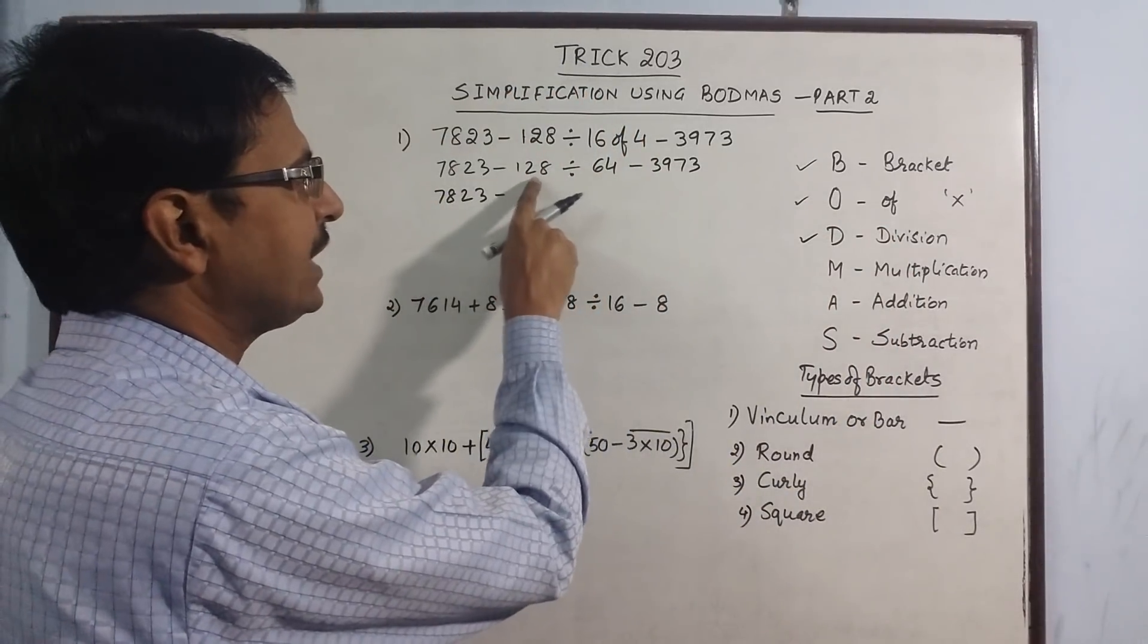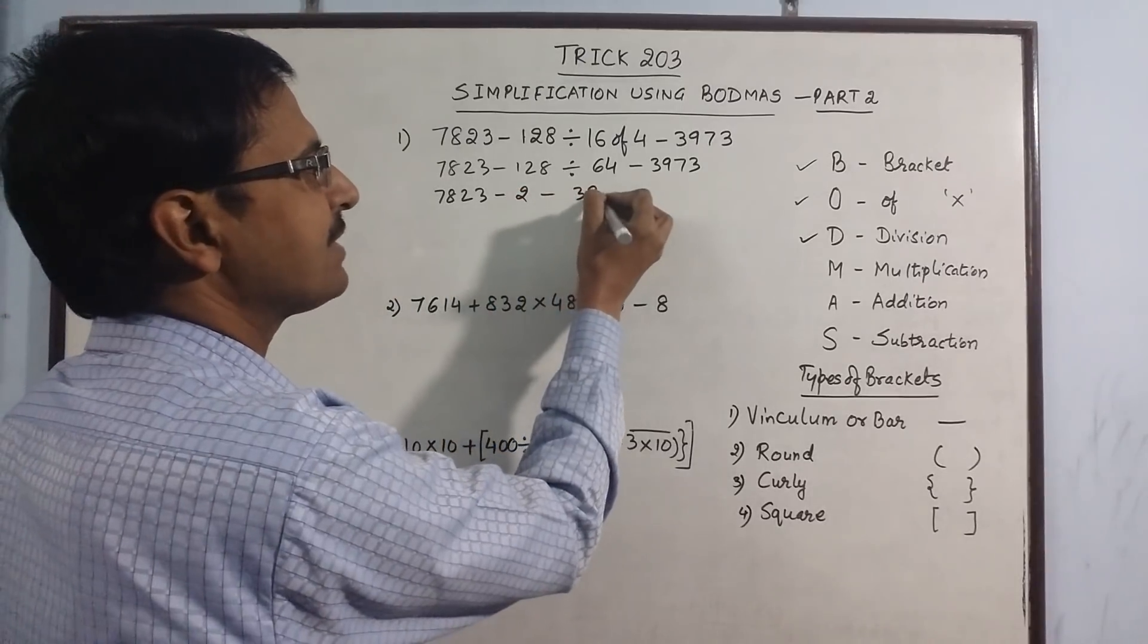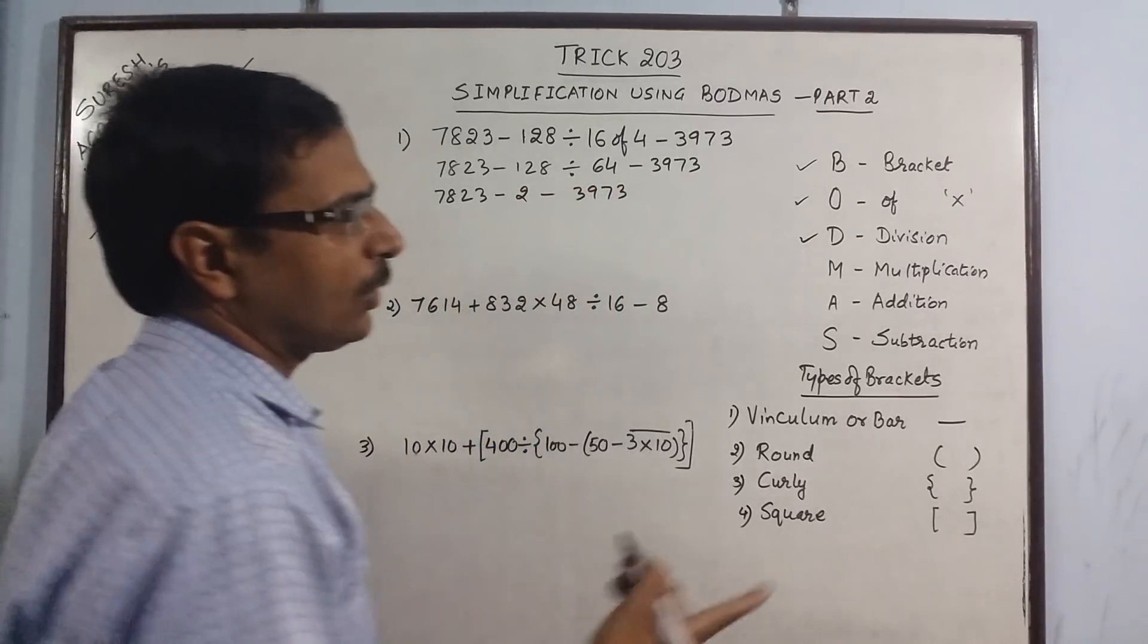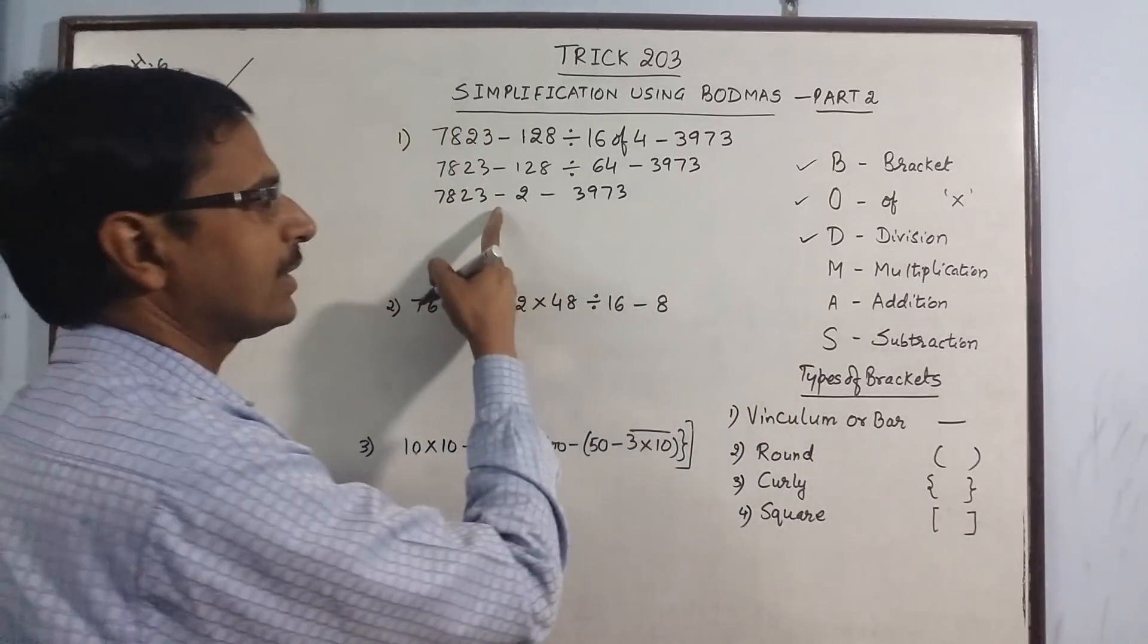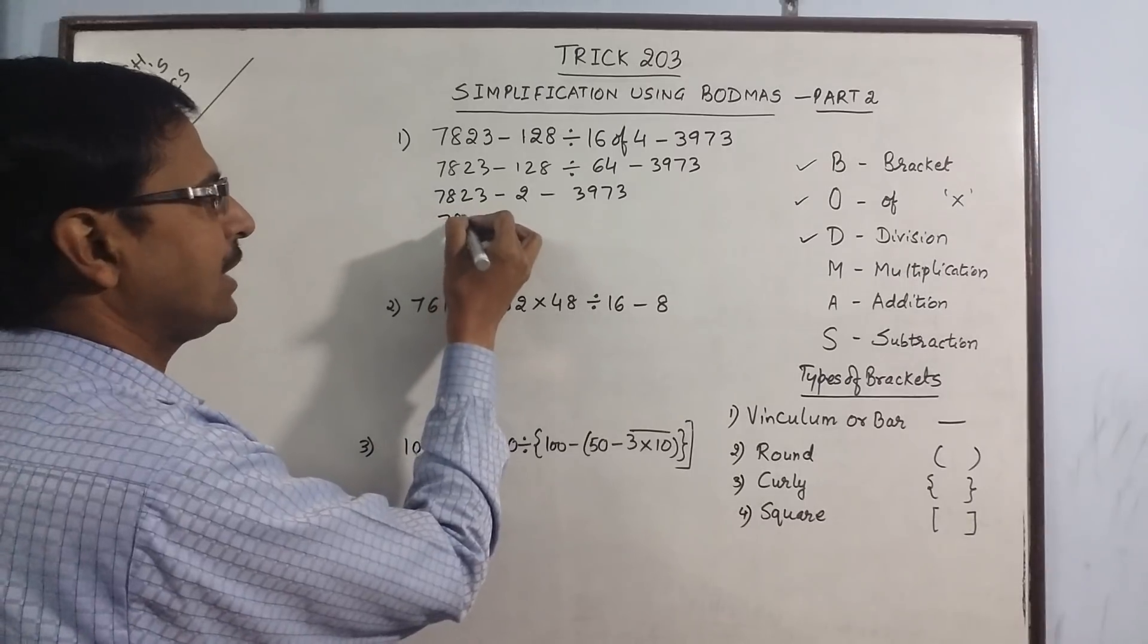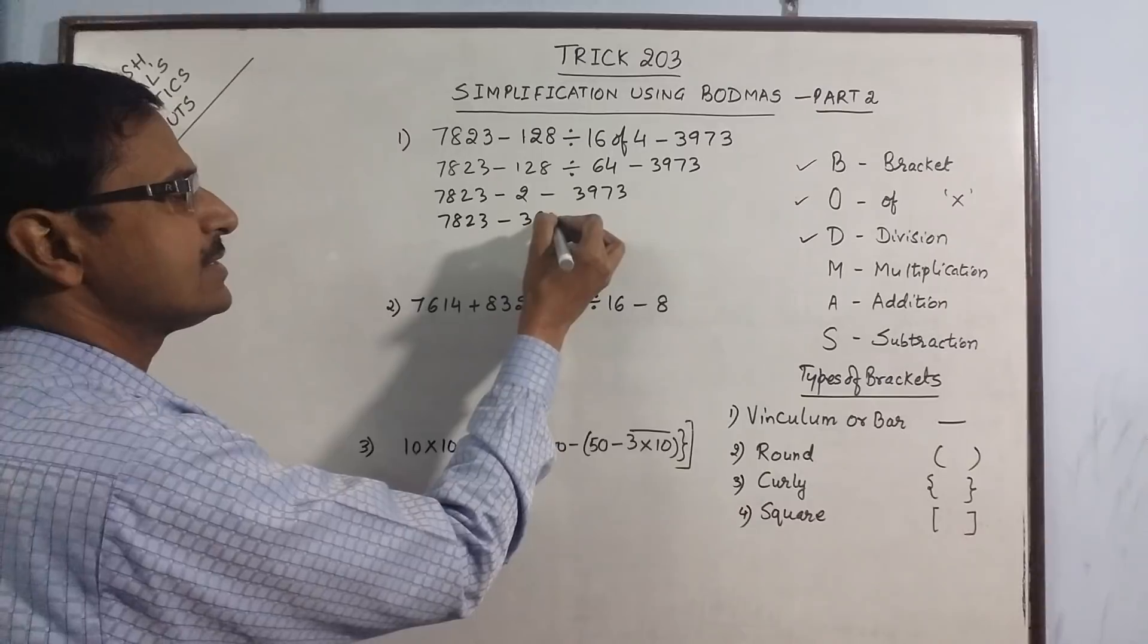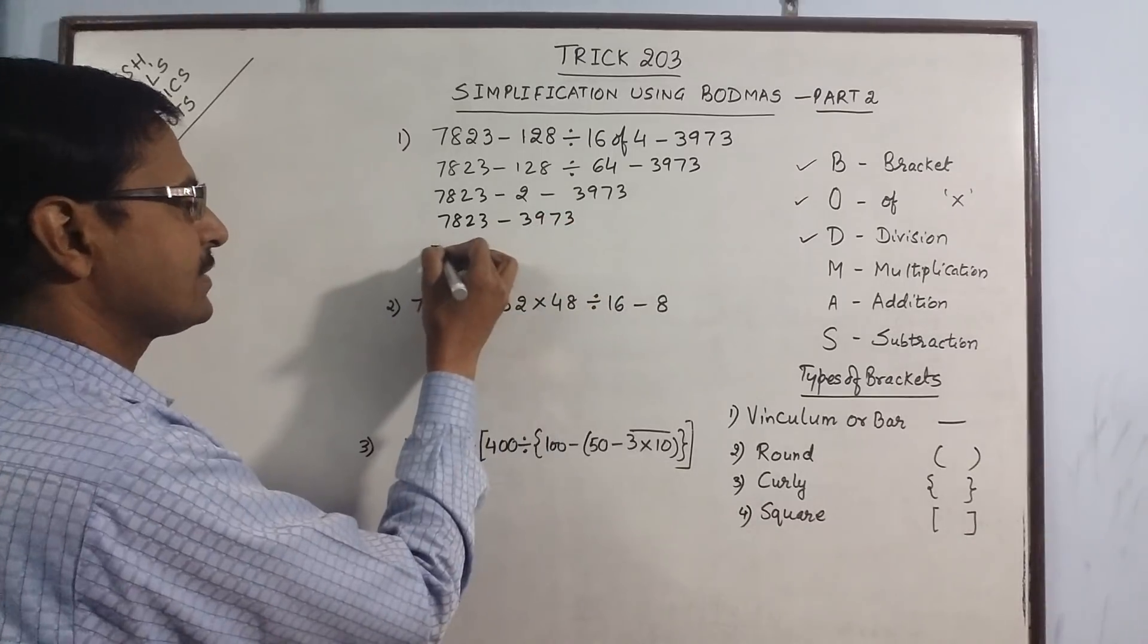7823 minus, next comes division, so here we have a divide sign, so 128 divided by 64 is 2, and then 3973. Now multiplication is not there, addition is not there, subtraction is there, so we need to just subtract 7823 minus 3973.